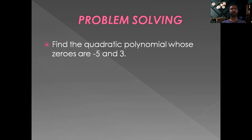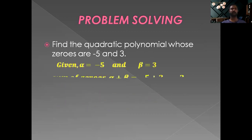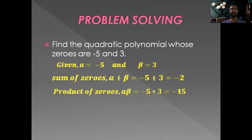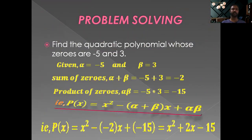Find the quadratic polynomial whose zeros are minus 5 and 3. Sum of zeros: minus 5 plus 3 equals minus 2. Product of zeros: minus 5 times 3 equals minus 15. Substituting into the formula: P(x) equals x square minus (minus 2)x plus (minus 15), which is x square plus 2x minus 15.